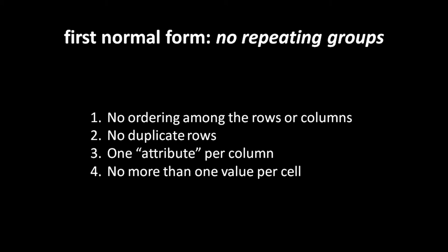No repeating groups also means you shouldn't have duplicate rows - in practice, every table should have a primary key. As long as you have a primary key for every table, you won't have duplicate rows. No repeating groups is also interpreted as meaning that for any column, that column only expresses one attribute - you shouldn't stuff multiple attributes into one column, and every cell should never have more than one value. The first normal form: make sure your tables are really tables - no ordering of rows, no ordering of columns, one value per cell.